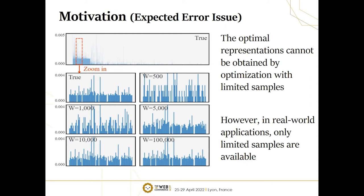Thus, we have the expected error issue. Looking at this figure, we can find the true sampling density of the node on the top and how the density is approximated by different numbers of samples. A larger W means more samples are available. So if we have quite a lot of samples, the learned representations are closer to the optimal ones. However, in real-world applications, only limited samples are available, so existing methods using density ratio estimation will suffer from the expected error.